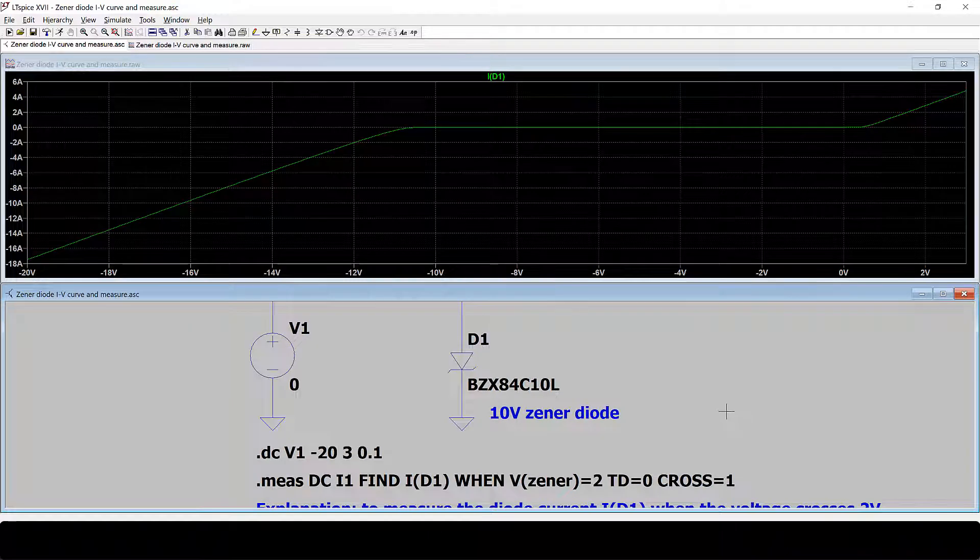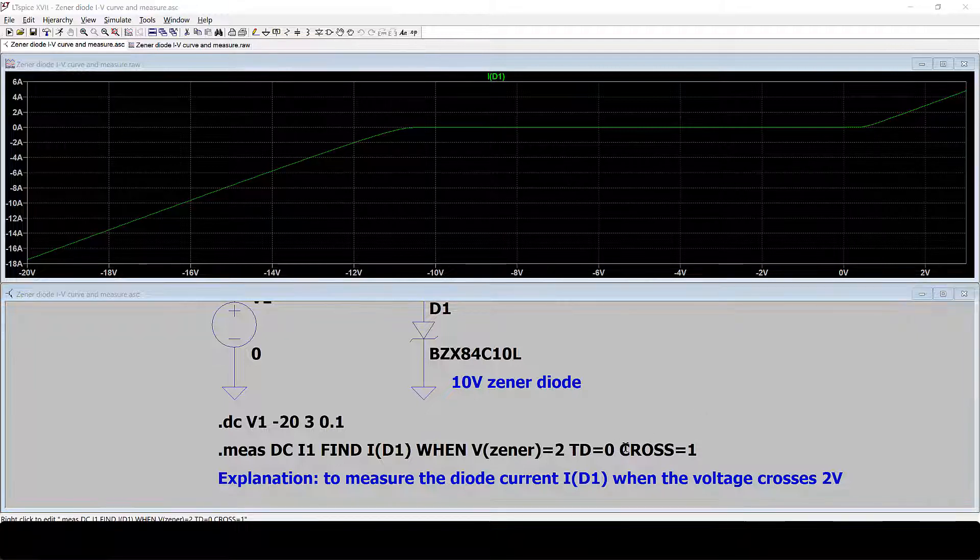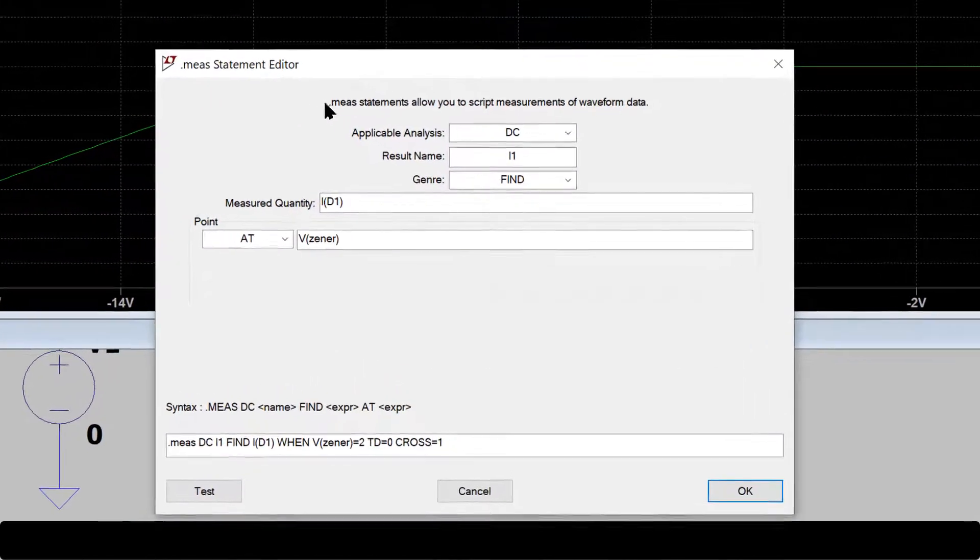Now we are interested to see the current when the voltage is 2V. So we want to check the current over here. You can use measure to do that. If we right-click over this syntax, you can see the measure statement.